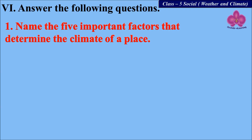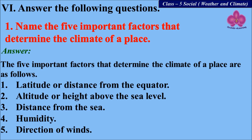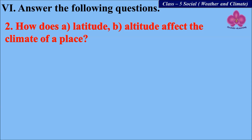Next: name the five important factors that determine the climate of a place. The five important factors are: first, latitude or distance from the equator; second, altitude or height above the sea level; third, distance from the sea; fourth, humidity; and fifth, direction of winds. How do latitude and altitude affect the climate of a place?